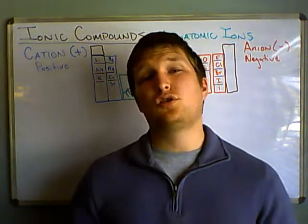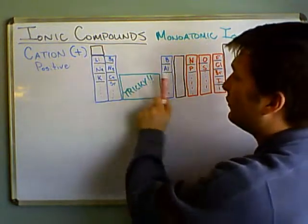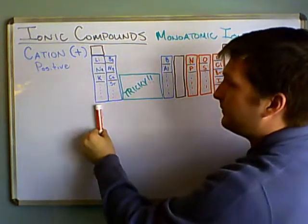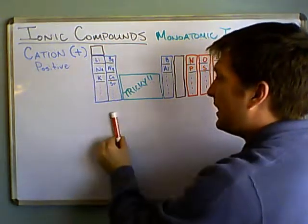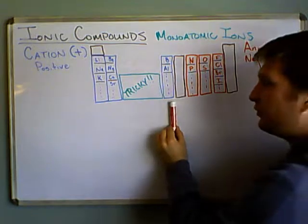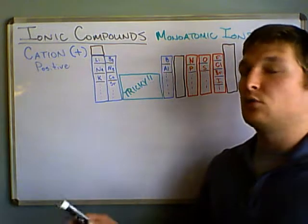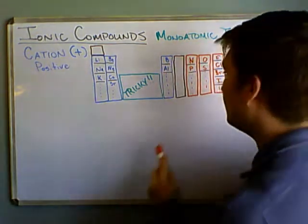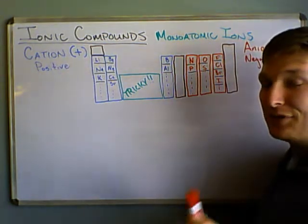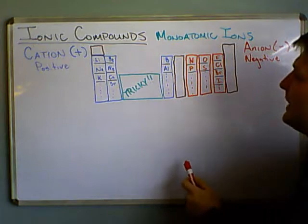There are certain trends in the periodic table. Atoms over here in this column — that's called Group 1A — and going across to 2A and 3A, everything from 3A over generally likes to lose electrons in order to become cations. Things in Group 4A do something different — they form what's called covalent bonds. We're going to get into that later, but for right now we're just talking about ions.